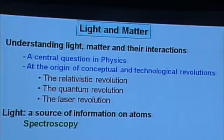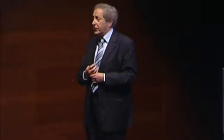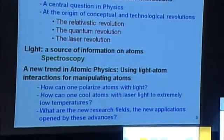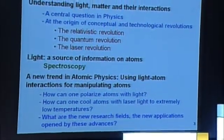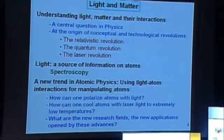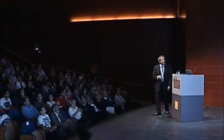When you look at the light emitted by atoms, you get information on these atoms and the medium where they are located — that's the purpose of spectroscopy. But a new point of view has been developed during the last few decades: to use light for manipulating atoms and changing their properties. I would like to describe how one can polarize atoms with light, how one can cool them to extremely low temperatures, and what are the new research fields and applications which have been opened by this research.